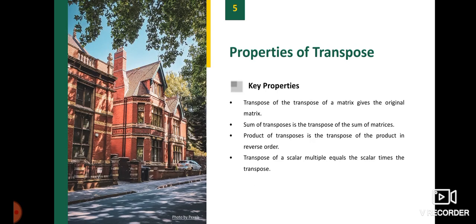Now, see the properties. Transpose of the transpose of a matrix gives the original matrix. Sum of transposes is the transpose of the sum of matrices. Transpose of a scalar times a matrix equals the scalar times the transpose.